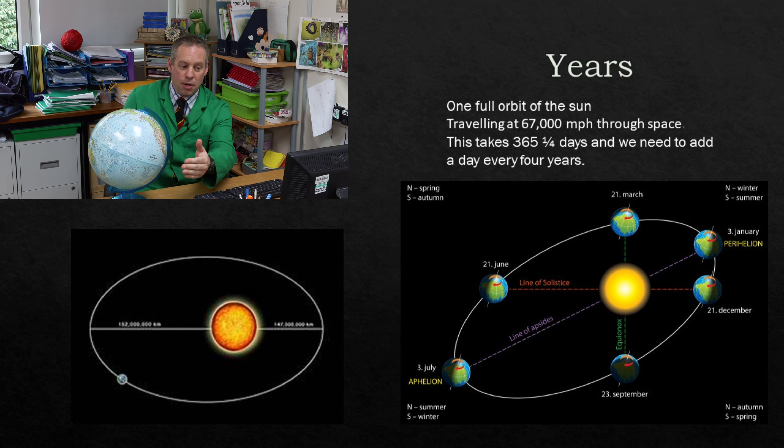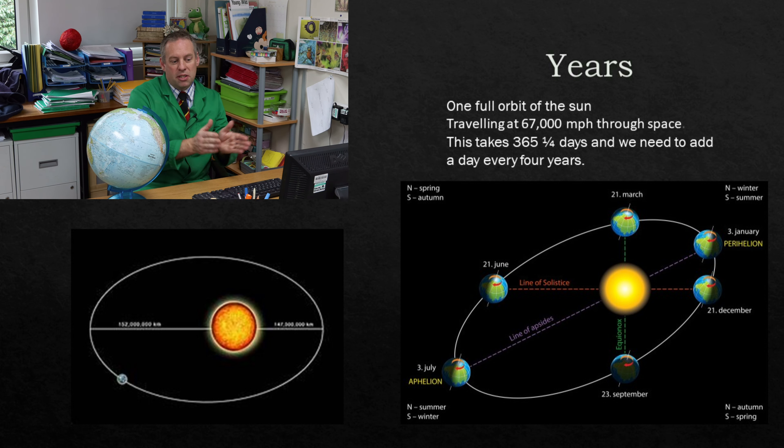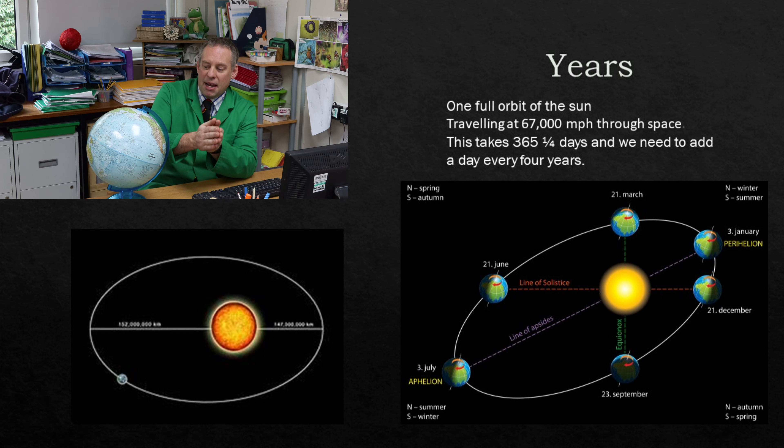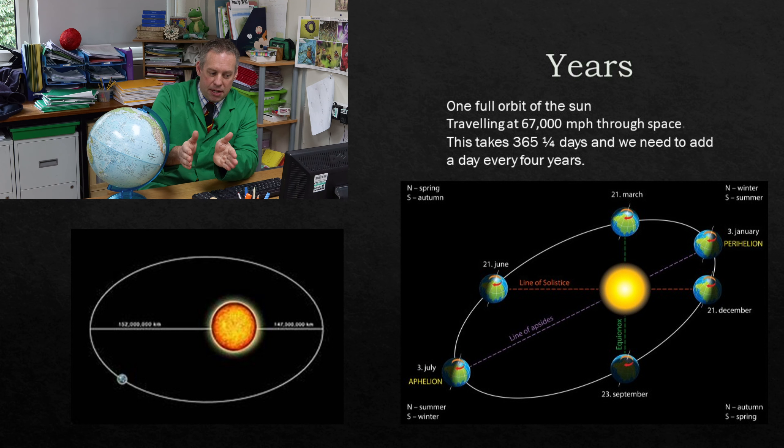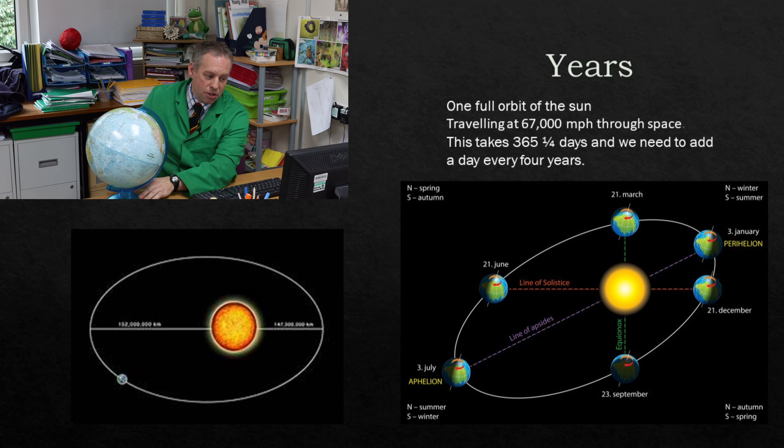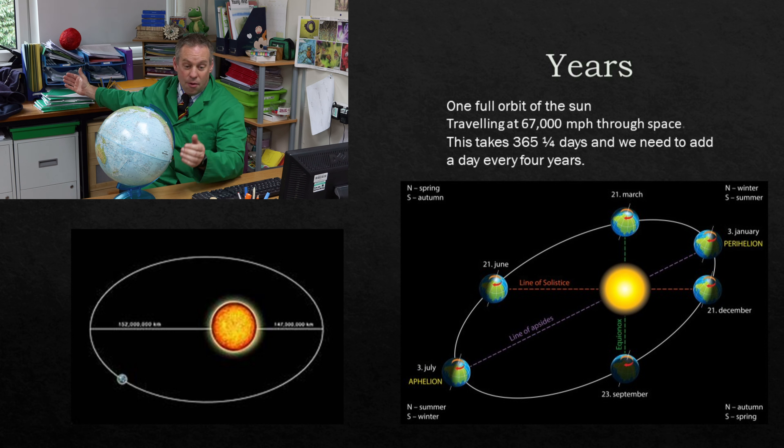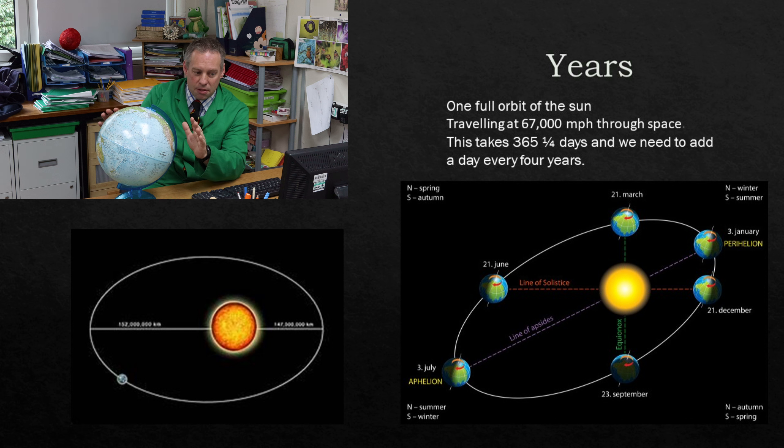There isn't much temperature difference. So that doesn't cause summer and winter. Something else does. But we can see as it goes round it would spin round. It actually travels faster when it's close to the sun and then slower when it's further away and then faster round.